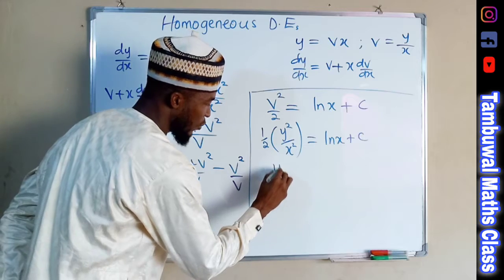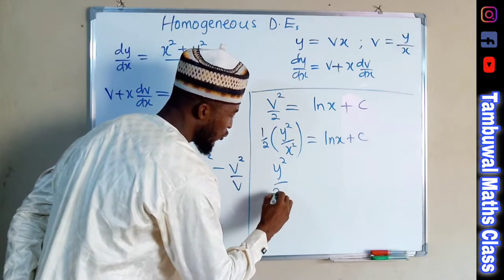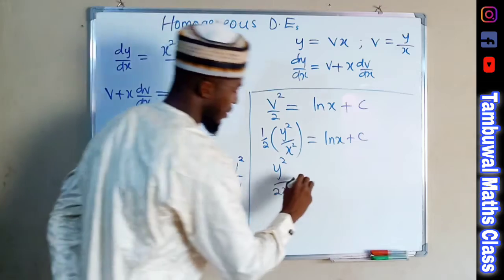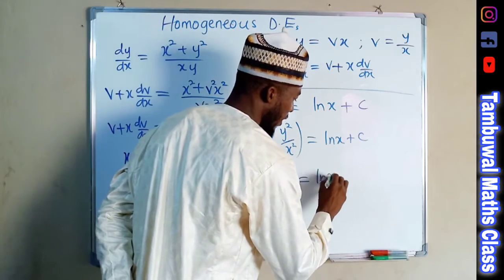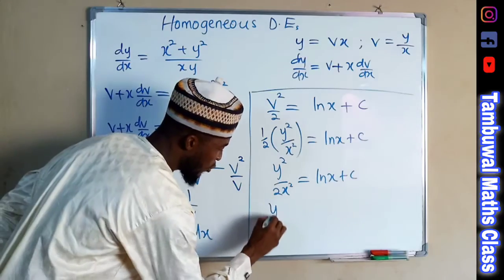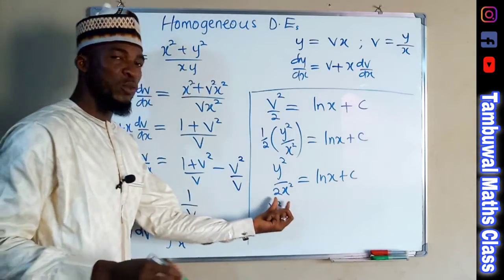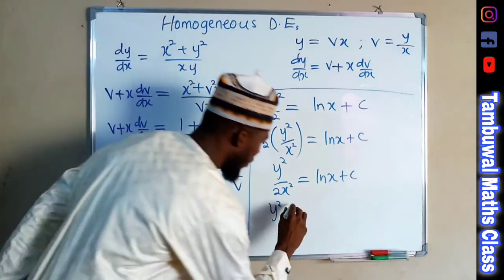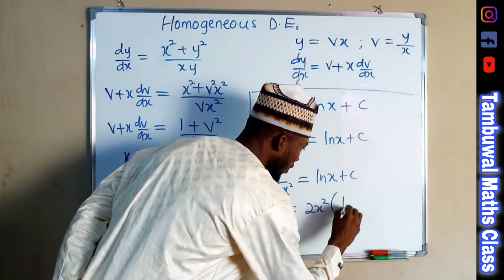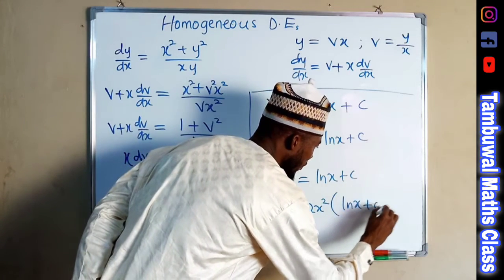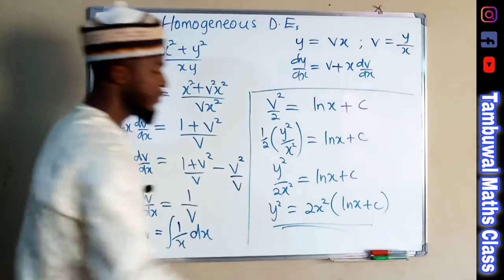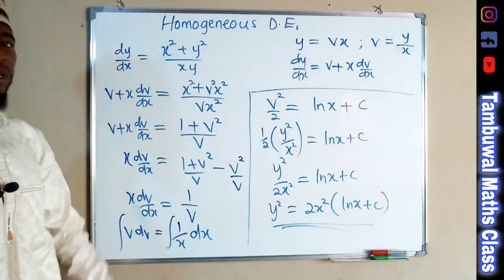We are not done yet because v equals y over x, so we replace v with y over x. We have one half times y squared over x squared equals natural log of x plus C, which simplifies to y squared over 2x squared equals natural log of x plus C. Multiplying both sides by 2x squared gives y squared equals 2x squared times the natural log of x plus C. This is the solution for this differential equation.